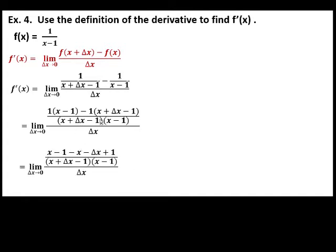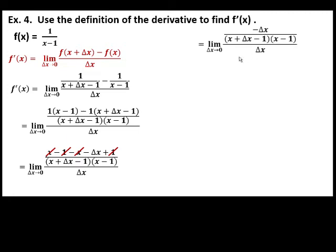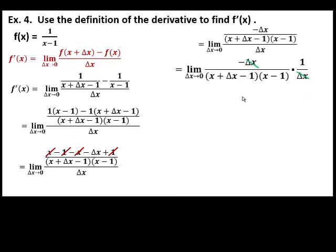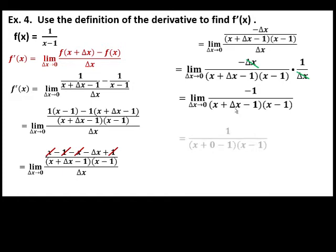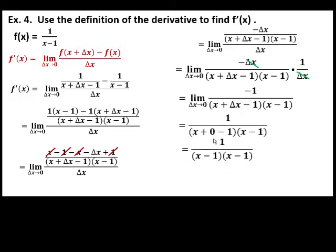The LCD is these two denominators. Combine similar terms. This is now the simplified form of the fraction. Perform the operation of this complex fraction to cancel out the common factor. This is now in more simplified form. We can now evaluate the limit as delta x approaches 0. Replace delta x with 0, then simplify. The derivative is f prime of x equal to 1 over quantity x minus 1, squared.